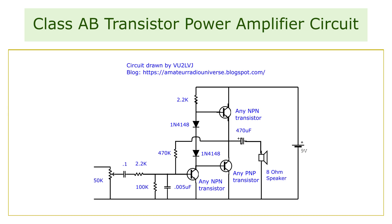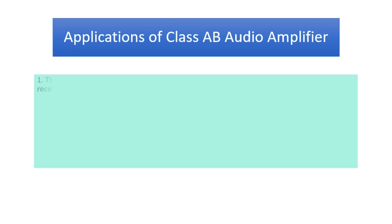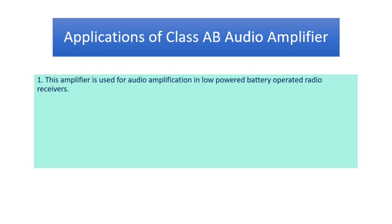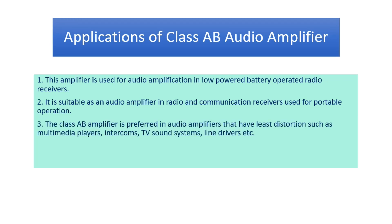This amplifier provides about 200 milliwatts of power into an 8 ohms load using a 9 volt battery. Applications of class AB audio amplifier: 1. This amplifier is used for audio amplification in low powered battery operated radio receivers. 2. It is suitable as an audio amplifier in radio and communication receivers used for portable operation. 3. The class AB amplifier is preferred in audio amplifiers that have least distortions, such as multimedia players, intercoms, TV sound systems, line drivers, etc.